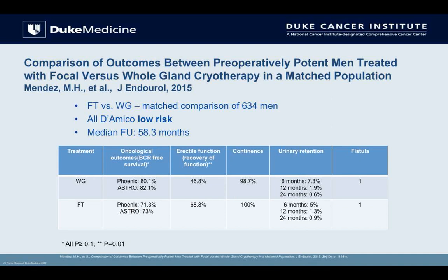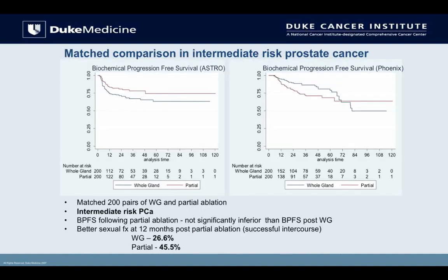In the absence of comparative trials, we looked at outcomes between preoperatively potent men treated with focal versus whole-gland cryotherapy. This is a matched population from the COLD database that Steve Jones discussed — 634 men, all low-risk patients. The bottom line: there was comparable oncologic control between focal and whole-gland treatment, but patients who underwent focal had higher erectile function preservation at 24 months. Continence, retention rate, and fistula rate made no difference between focal and whole-gland. In an intermediate-risk matched analysis of 200 men, biochemical progression-free survival was not significantly inferior for partial gland ablation, but sexual function was nearly doubled.